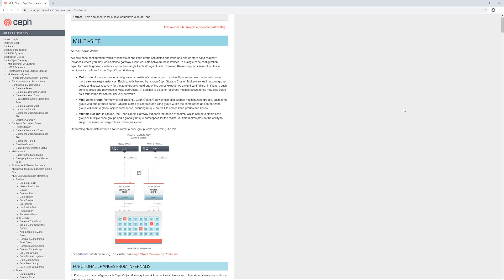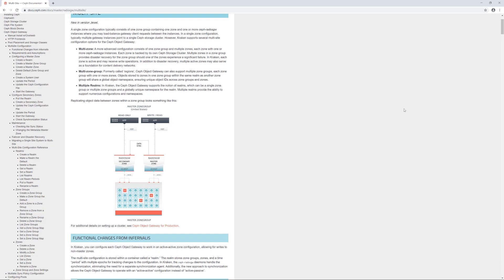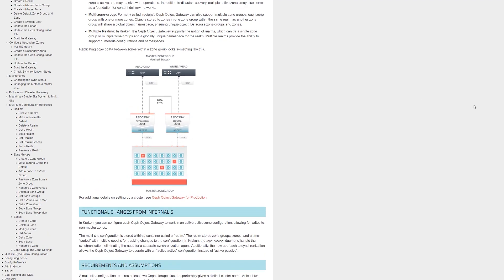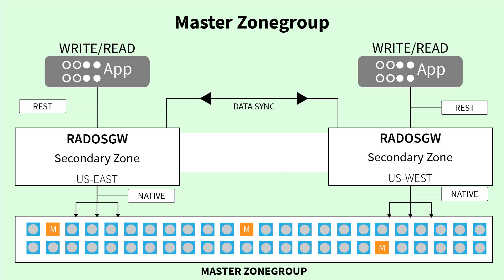Ceph Object Multi-Site allows anyone to build their own cloud that can be accessed from all over the world by putting new clusters online in different geographic locations to serve clients in that area. The data being generated by clients will be written to their respective cluster through a RADOS gateway endpoint. The data then replicates with all other sites within the zone group to become eventually consistent.